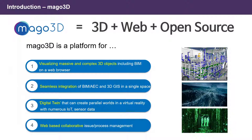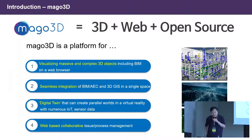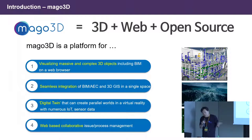Mago 3D is 3D-based, purely web-based, and purely open source-based. We are trying to visualize massive, very large, and very complex data like CAD and BIM data in your web browser. We also try to integrate indoor space and outdoor space seamlessly. Eventually we would like to pursue a digital twin platform that integrates almost all information on our earth in web browsers.